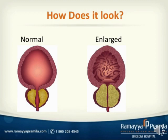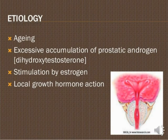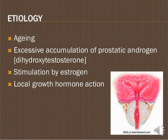Now we will see the etiology of BPH. The first etiology is aging. As we know, persons older than 50 years are basically affected. Aging is one kind of risk factor for the enlargement of the prostate gland. The second factor is excessive accumulation of prostate androgens, which also poses a risk for BPH.